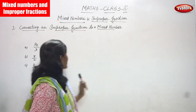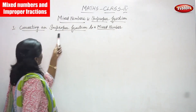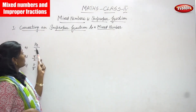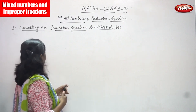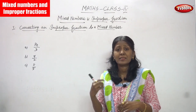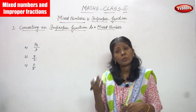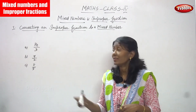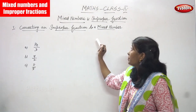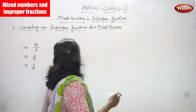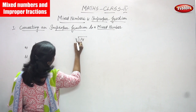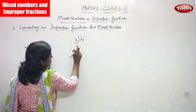Now we are going to solve the question: converting an improper fraction to a mixed number. The first question is 14 by 3. 14 is the numerator and 3 is the denominator. 14 is the greater number and 3 is the smaller number, so it is an improper fraction. Now we are going to see converting an improper fraction to a mixed number. That is 14 by 3 — so now we are going to divide. 14 is the dividend and 3 is the divisor.